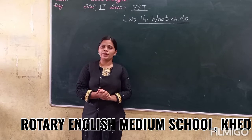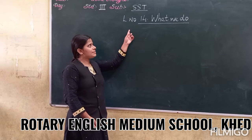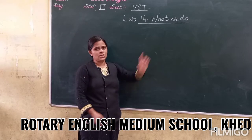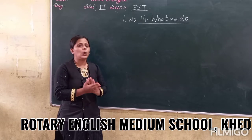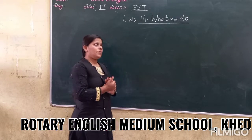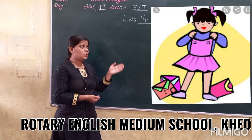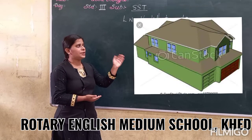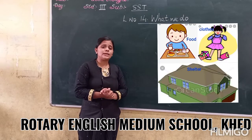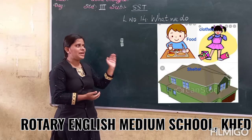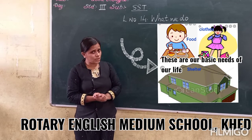Now my dear children, let's move to the new lesson, that is lesson number 14. As you all know, we all need food to eat, clothes to wear, and a shelter. So what are all these? These are our basic needs of our life.